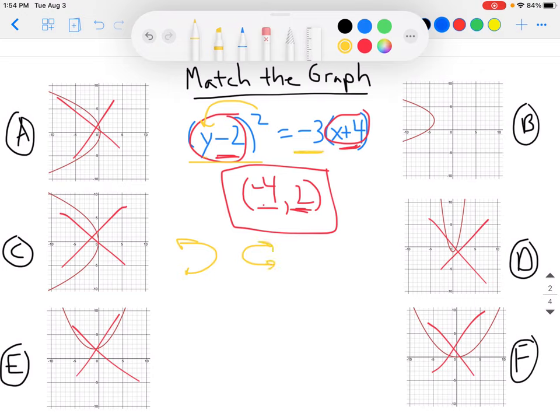And then based off of this number right here, I can see that it's going to be, it would have to be this right here. It would have to be that one. Because it's negative, so it's going to go to the left rather than the right.